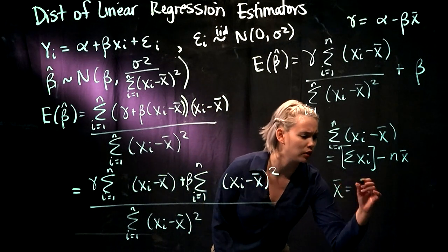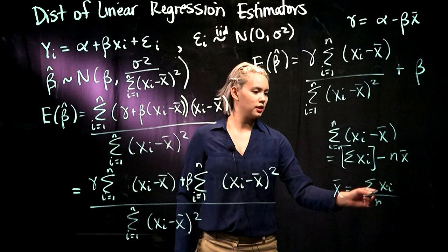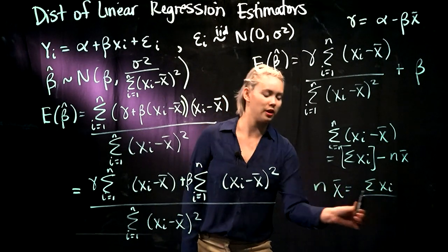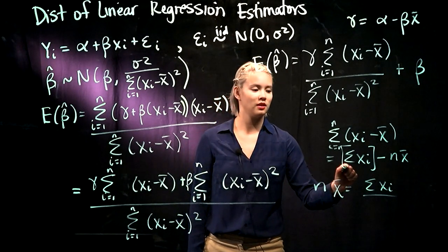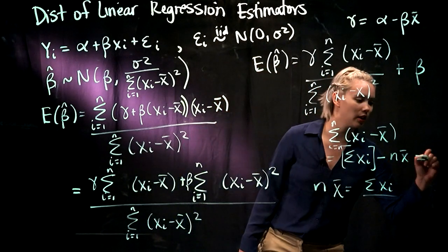But let's think about the definition of x bar. X bar is equal to the sum of the xi's divided by n. So in other words, the sum of the xi's is equal to n times x bar. So we have sum of the xi's minus n times x bar. This is just equal to 0.